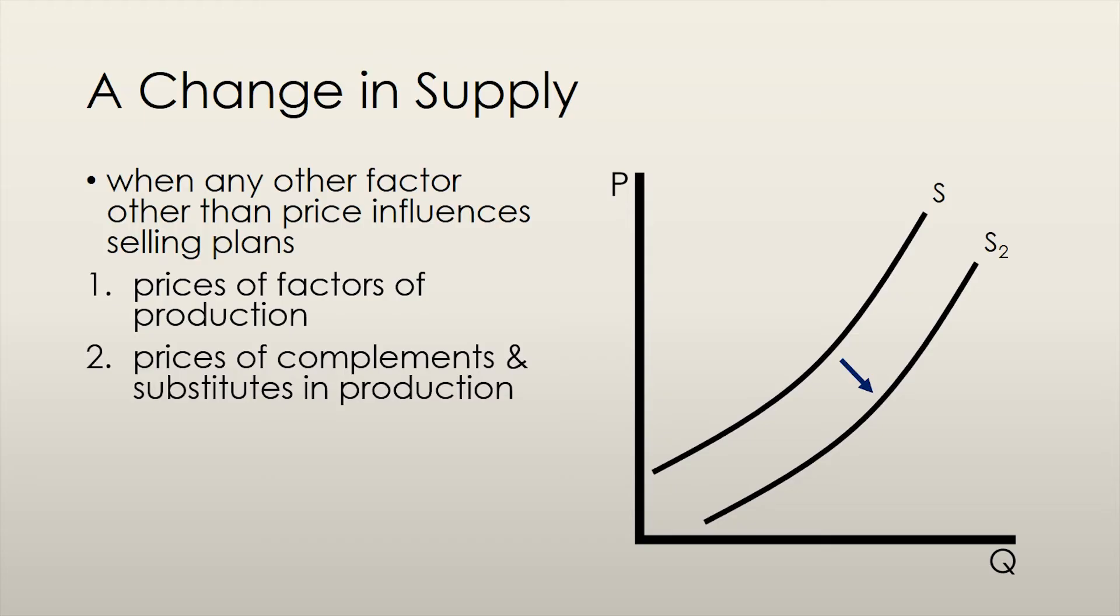The second factor that can influence supply as a whole is the prices of complements and substitutes in production. Complements in production are two goods that can be produced together. As an example, let's consider beef and cowhides. Both beef and cowhides come from cows. Let's say that we're looking at the market for beef and we are told that the price of cowhides just went up. If this is the case, then the quantity supplied of cowhides would increase. In essence, more cows are being killed for their cowhides.